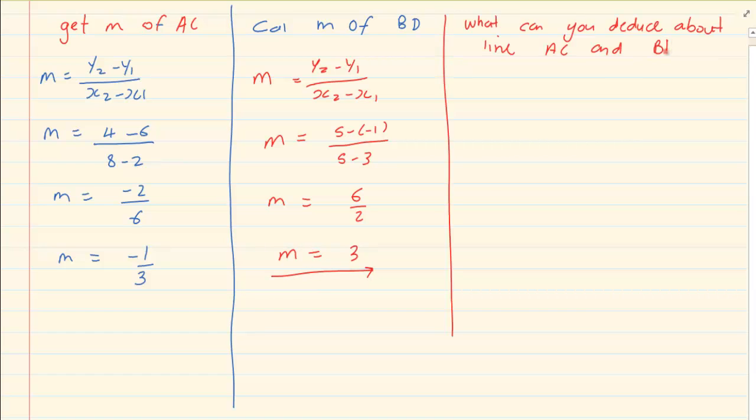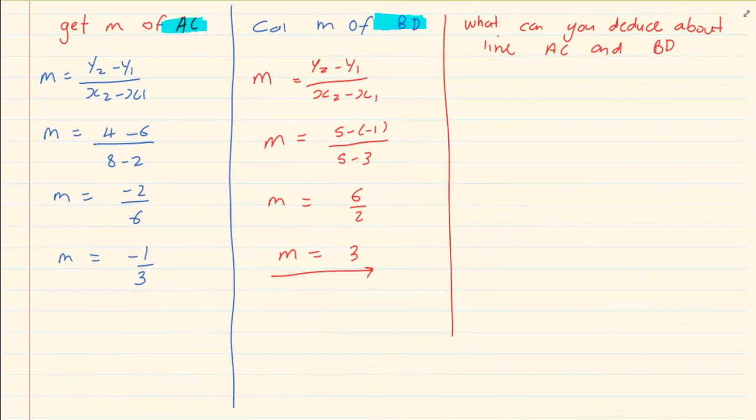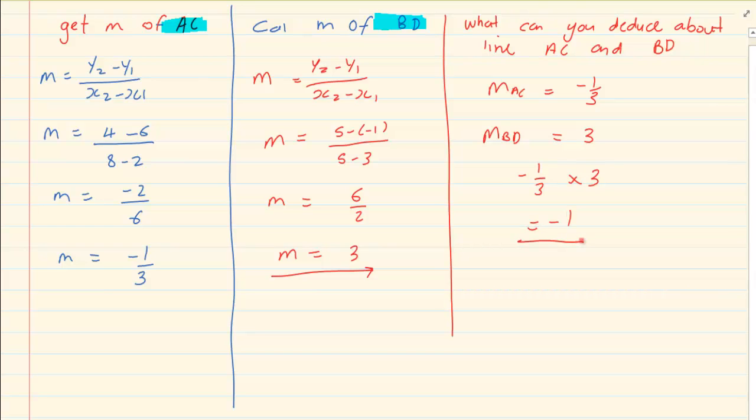Then they would ask you, what can you decide regarding line BD and line AC? If you look at their gradients, the gradient of AC is equal to minus a third and the gradient of BD is equal to 3. Minus a third times 3 is equal to minus 1. What we know is that M1 times M2 is equal to minus 1. Therefore, they are perpendicular.